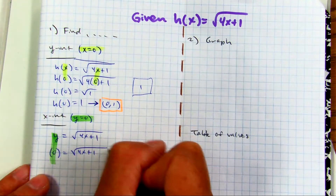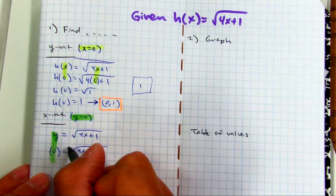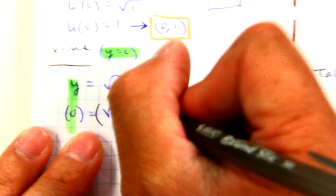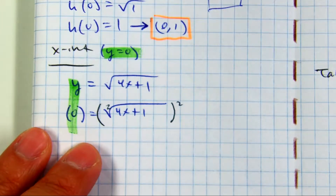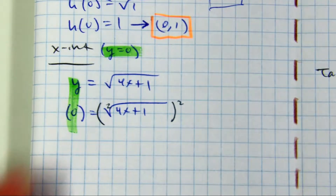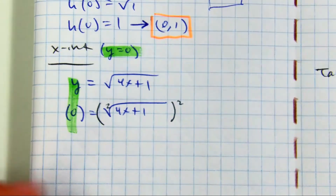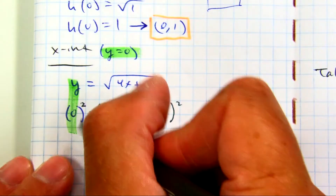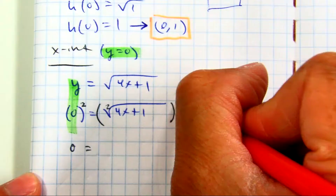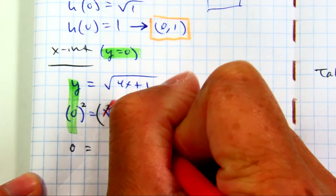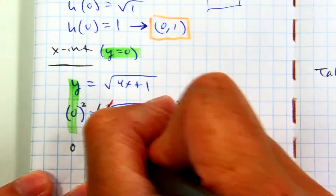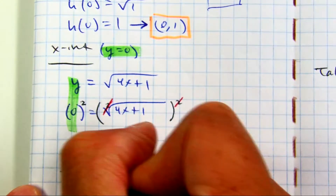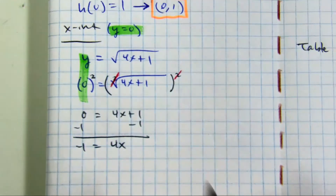What's the opposite of a square root? Power of two. There's a number here called the index. Does anyone know what number that is? It's a two — if you don't see it in math, there are some numbers that are implied. That is a two. So if I square the right side, I have to square the left side. Zero squared is zero. The square root and the index cancel, leaving you with four x plus one. Subtract one, then divide by four. X is equal to negative one fourth, and the ordered pair is negative one fourth comma zero.